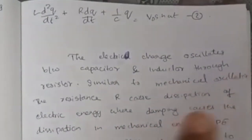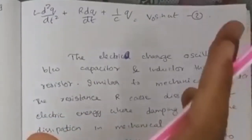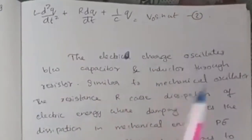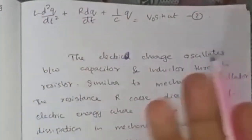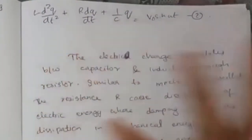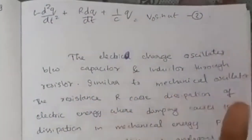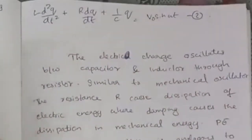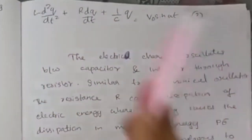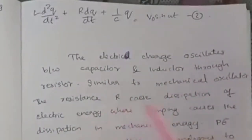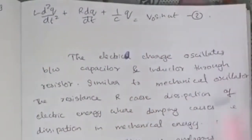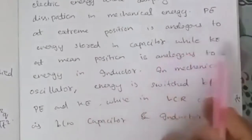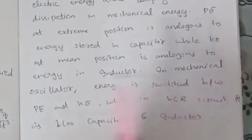Resistance causes dissipation of electrical energy, where damping causes dissipation in mechanical energy — it is the same role. PE at extreme position is analogous to energy stored in the capacitor, while KE at mean position is analogous to energy stored in the inductor. That is a very important point.